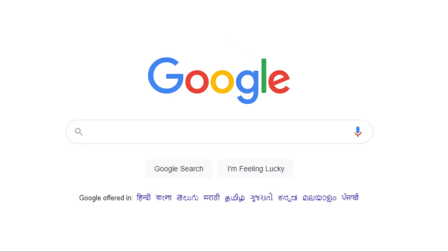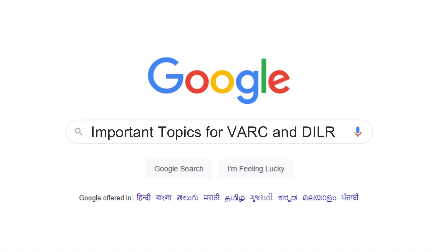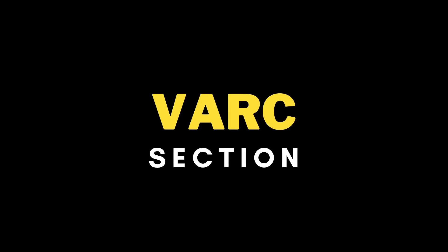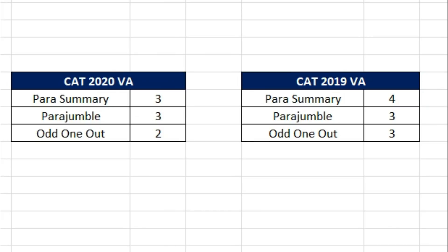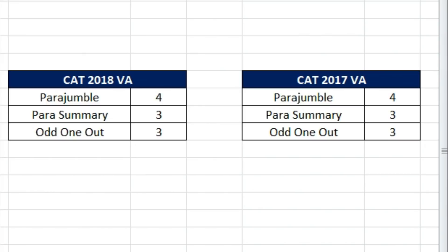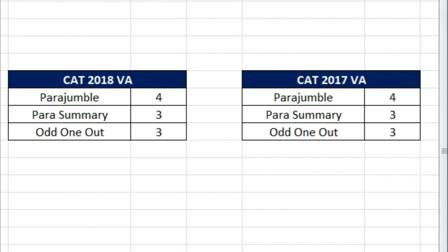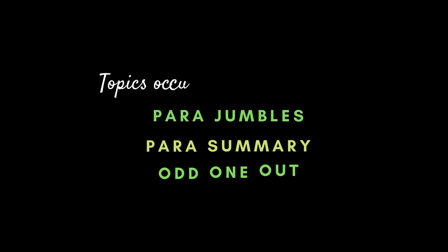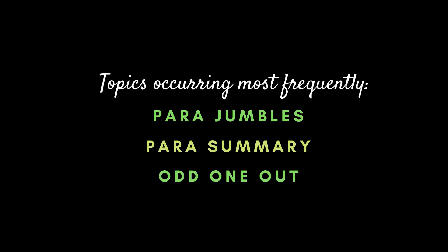Another request I got in the comment section was to do a similar sort of analysis for the VARC section as well as the DILR section. When I think of VARC, the answer is pretty simple. Over the last years from 2017 onwards, every single year the same type of VA questions keep occurring. There are only three types: first is parajumbles, second is parasummary, and third is odd one out or sentence elimination. These are the only three kinds of questions that keep coming in the VA section, and the rest are RC questions. So if you want to prepare for VA very well, practice these three topics well.